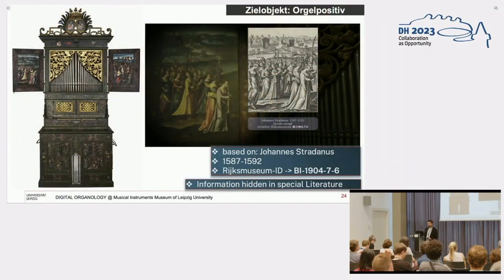This multimodal aspect means that I can also link to external identifiers. For example, the artwork, this one was based on a drawing by Johannes Stradanus. It's in the Rijksmuseum, so I can link to this Rijksmuseum ID. This information is very hidden in some organological literature. I want to make it accessible, and I can annotate this 3D model with this information.